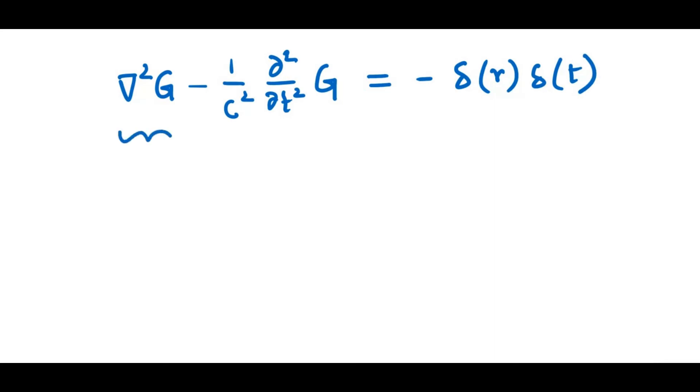However, we have just noticed that this can be written as 1 over R, and the second order spatial derivative, and then acting on R times G. Notice, here we have derivative with respect to T, and T and R are supposed to be independent coordinates.